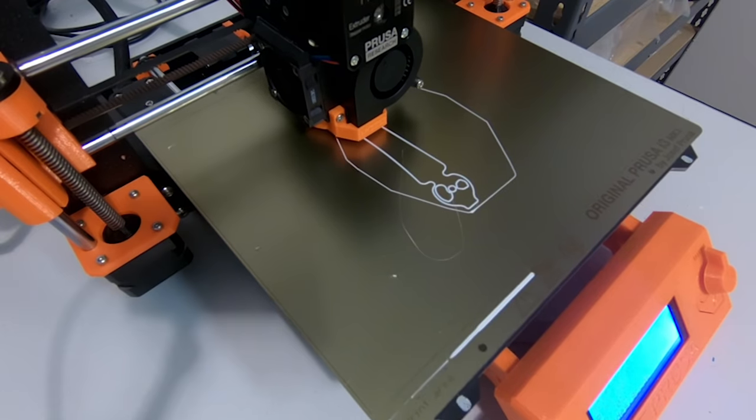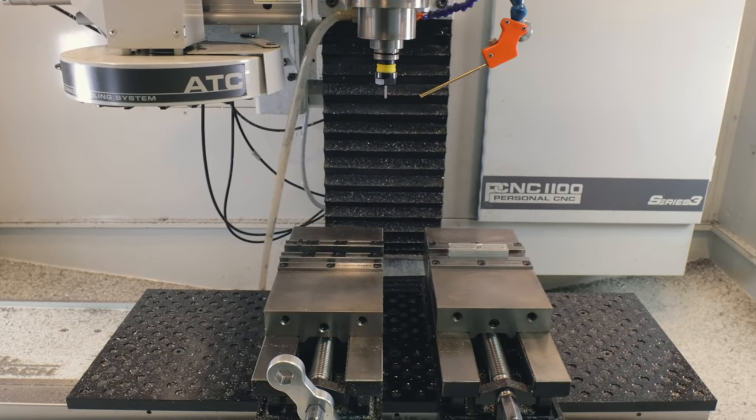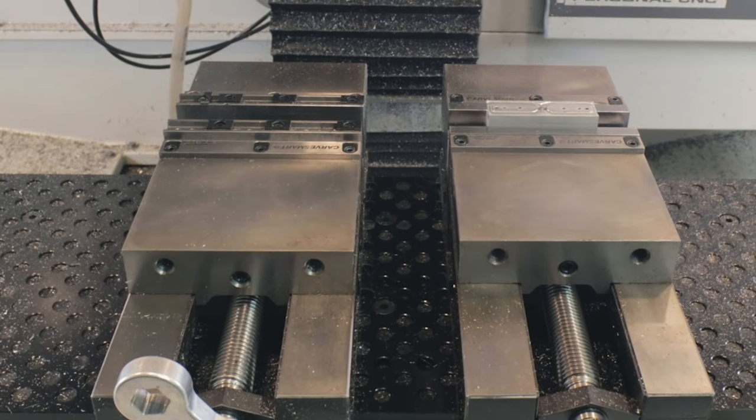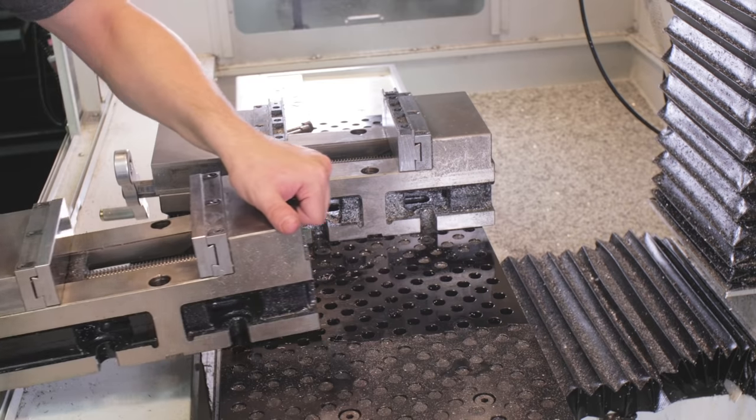While things are printing, I decided to make some changes with how things are set up in the mill. Right now, all of the space is being taken up by two vises. Basically, this means I only have two places I can put things.